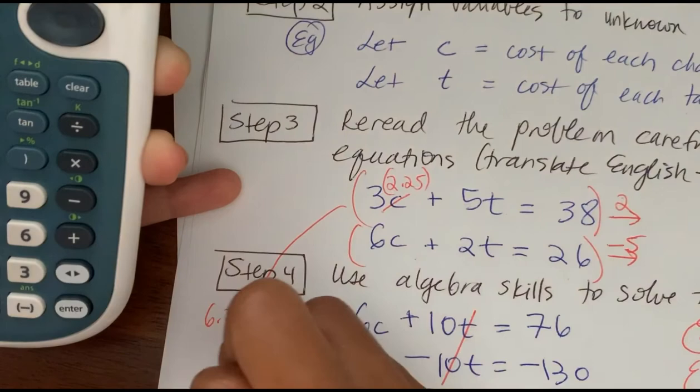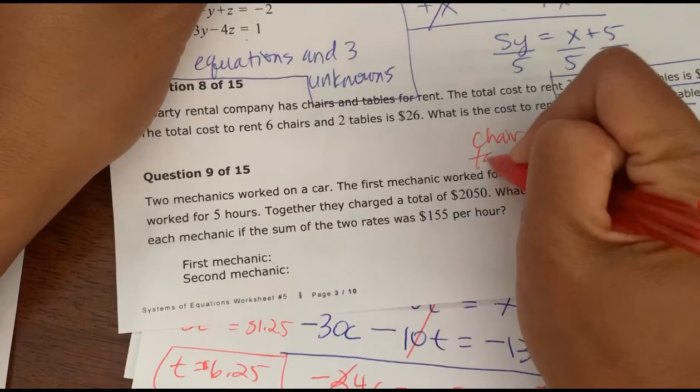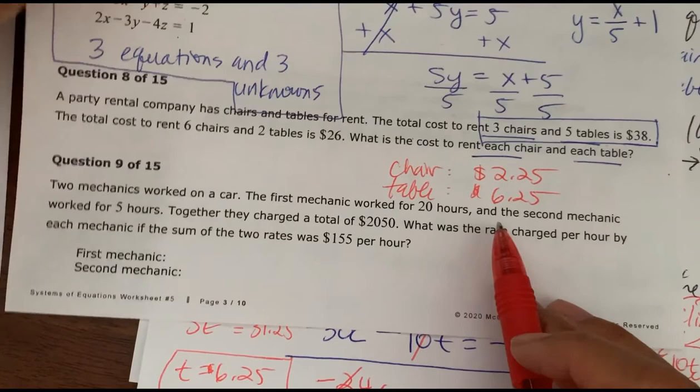You can always check your work by plugging these values — c = 2.25 and t = 6.25 — back into the two original equations to make sure they produce true statements.